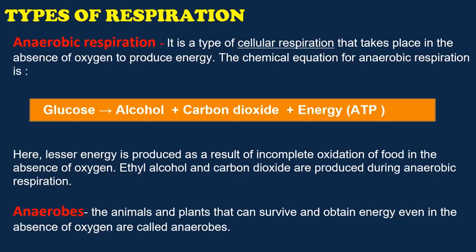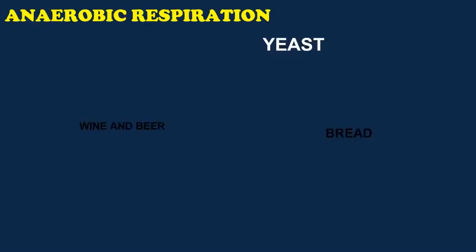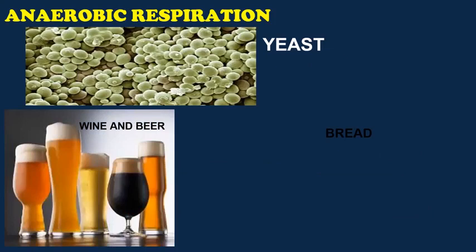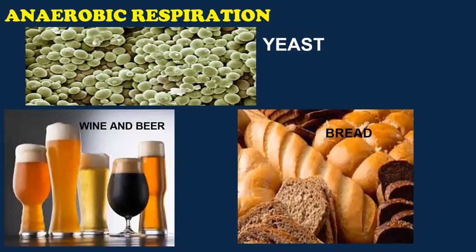Some examples of anaerobes are yeast, some kinds of bacteria, and parasitic animals that live in the alimentary canal like roundworms and flatworms. Yeast respires anaerobically because it does not get oxygen in the alimentary canal. Yeast is a single celled organism — it respires anaerobically and yields ethyl alcohol. The yeast cells are therefore used to make wine and beer, and yeast is also used in making bread. When yeast respires anaerobically, it carries out the process of fermentation and produces carbon dioxide, which while escaping makes the dough rise and leaves holes in it, making the bread fluffy.